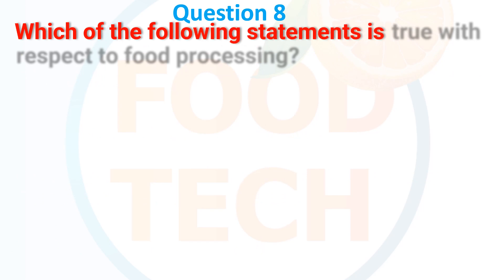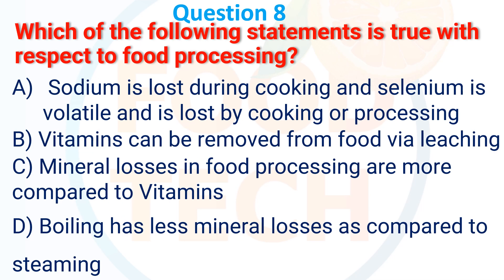Question 8. Which of the following statements is true with respect to food processing? A. Sodium is lost during cooking and selenium is volatile and is lost by cooking or processing. B. Minerals can be removed from food by leaching. C. Minerals lost in food processing are more compared to vitamins. D. Boiling has limited mineral losses compared to steaming. The answer is A: sodium is lost during cooking and selenium is volatile and is lost by cooking or processing.